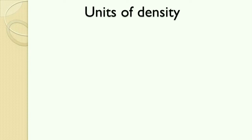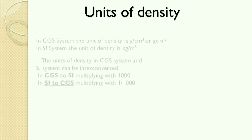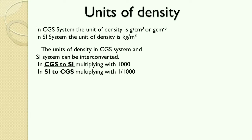Since density is the ratio of mass and volume, the units of density are the ratio of the unit of mass and the unit of volume. In the CGS system, the unit of density is gram per centimeter cubed, or g·cm⁻³. In the SI system, the unit of density is kilogram per meter cubed, or kg·m⁻³.